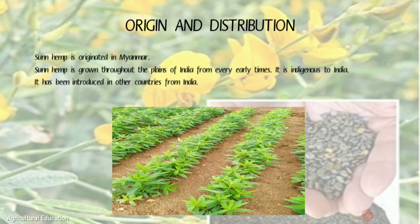Origin and Distribution: Sunhemp is originated in Myanmar. It is grown throughout the plains of India from early times and is indigenous to India. It has been introduced in other countries from India.